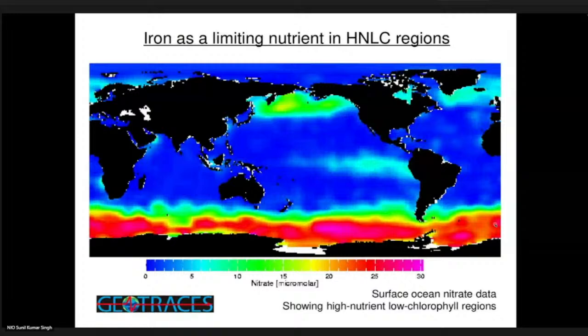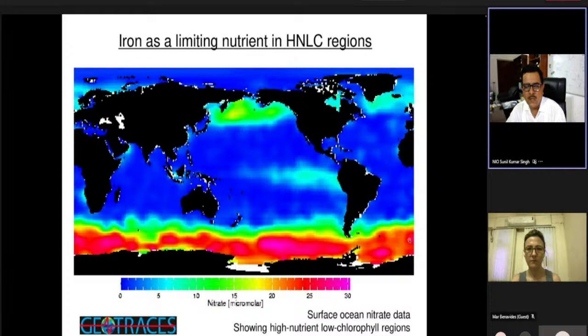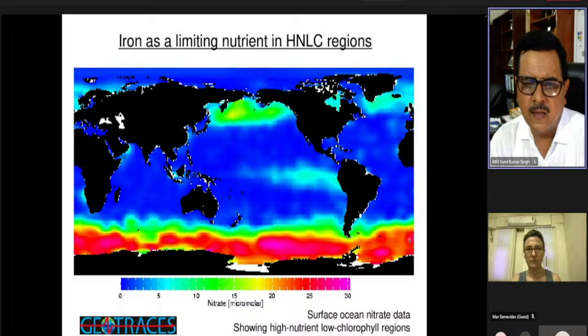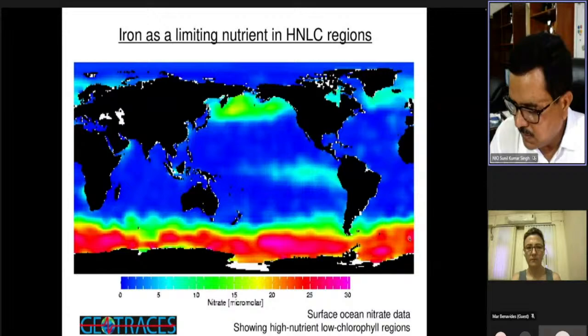The nitrate concentration in the global ocean is very high in exactly those areas around Antarctica where productivity is very low. This is a very enigmatic situation — high nutrients but low productivity. This area is called High Nutrient Low Chlorophyll (HNLC). In the beginning, people were not aware of why, even after the bloom season, nutrients remained unutilized. In the 1990s, after iron fertilization experiments, people started thinking this was due to lack of micronutrients.